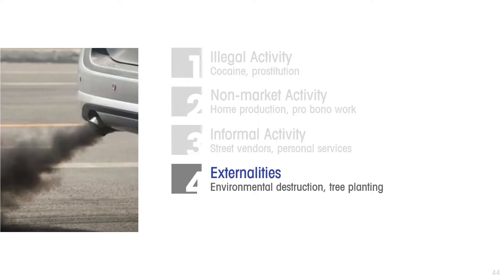Another problem is externalities. Negative externalities are a cost of production that ends up not being monetized — it ends up being imposed on parties that are not part of the actual transaction. It really should be counted as a cost of production and therefore be represented in GDP, but it is not. So negative externalities and environmental destruction are not deducted from GDP. And positive externalities, like the benefits of tree planting and what that does for the environment, also don't get counted in GDP.